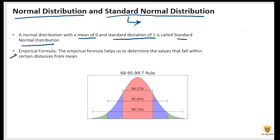Now there is another concept called empirical formula. This formula helps us to determine the values that fall within certain distances from the mean. So if I talk about it, it is x-bar, and it is minus 1s and plus 1s.